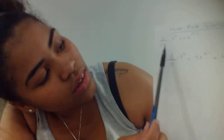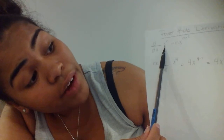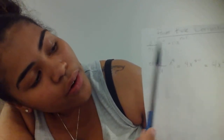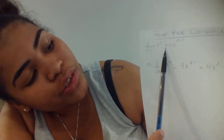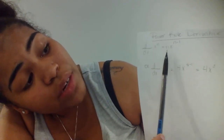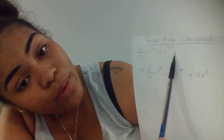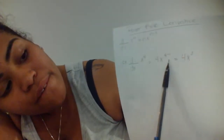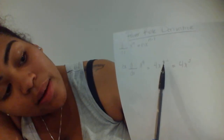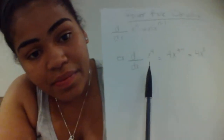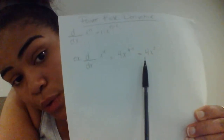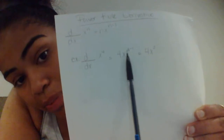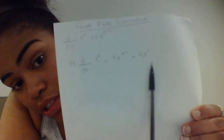Next we have the power rule. When you take the derivative using the power rule, you have a variable with a power. What you do is bring the exponent to the front, and then subtract that exponent by 1. So the derivative of x to the fourth power is equal to 4x to the power of 4 minus 1, which equals 4x to the third power.